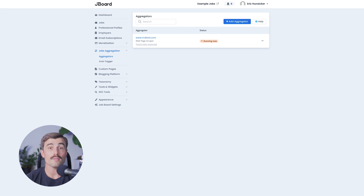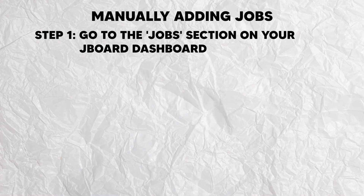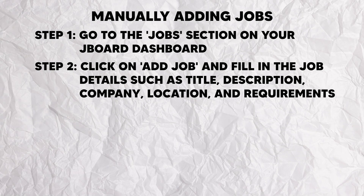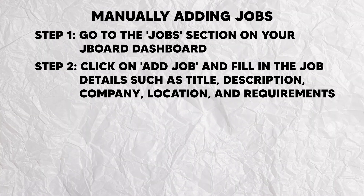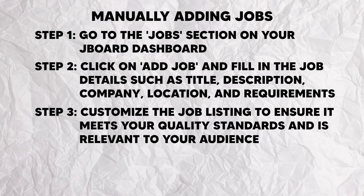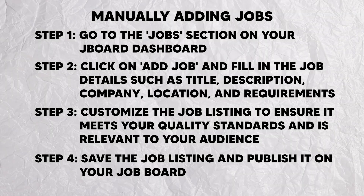This process ensures that you have a wide variety of listings, enhancing the appeal of your job board to its visitors. While the scraper tool is great, you might also want to manually add job listings to maintain quality and relevance. Here's how: step one, go to the Jobs section on your JBoard dashboard. Step two, click Add Job and fill in the job details such as title, description, company, location, and requirements. Step three, customize the job listing to ensure it meets your quality standards and is relevant to your audience. Step four, save the job listing and publish it on your job board.